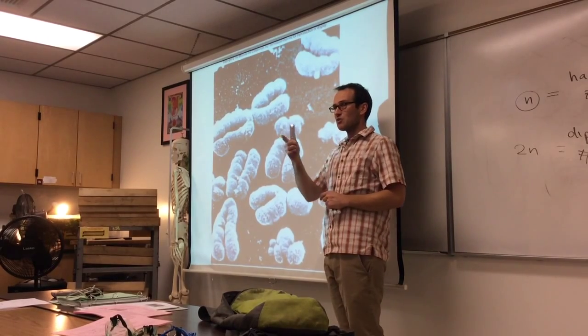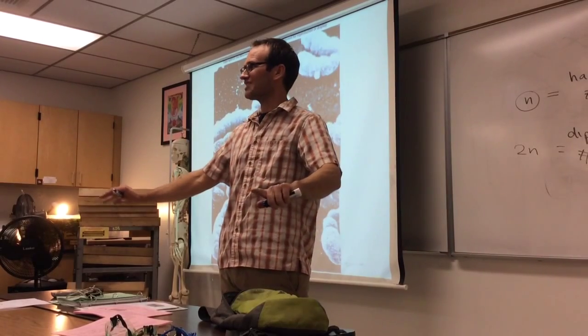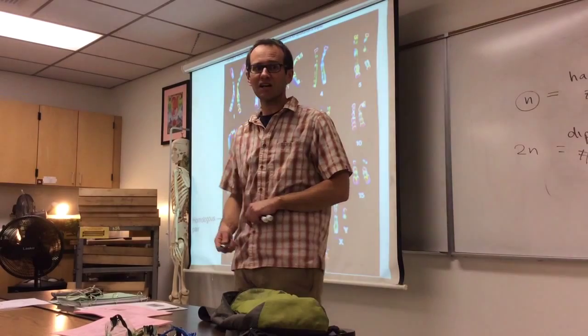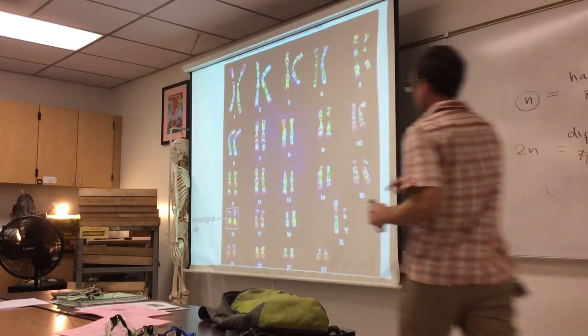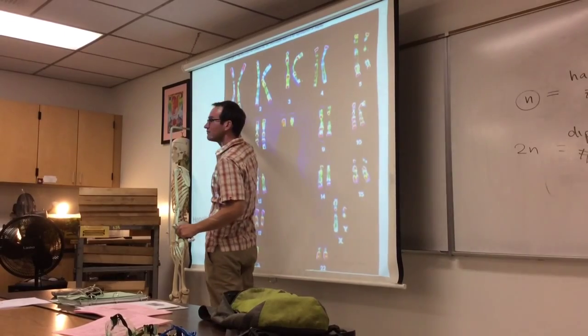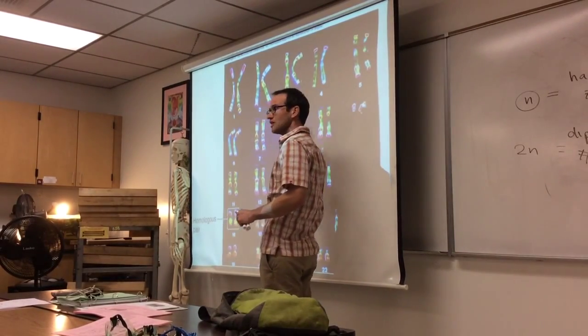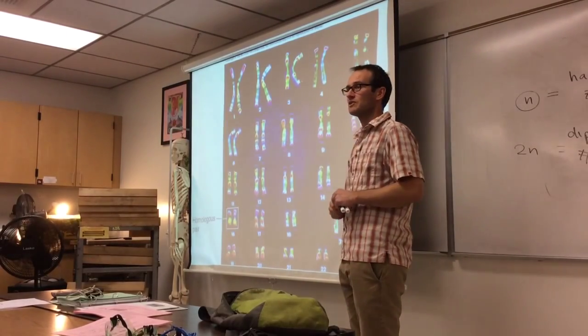So if you take one of your cells, if you're male, and you smear out the nucleus and stain all of the chromosomes and look at them, you'll see something that looks kind of like this. You'll see two copies of chromosome 1, two copies of chromosome 2, two copies of chromosome 3, and all the way on down the line until your X and your Y chromosome, if you're male.